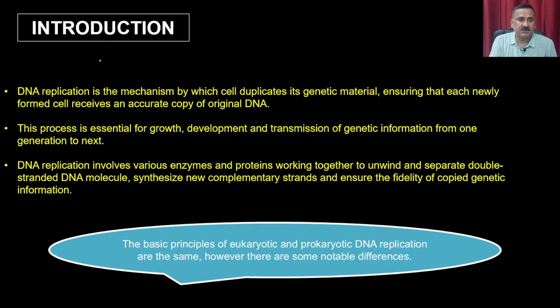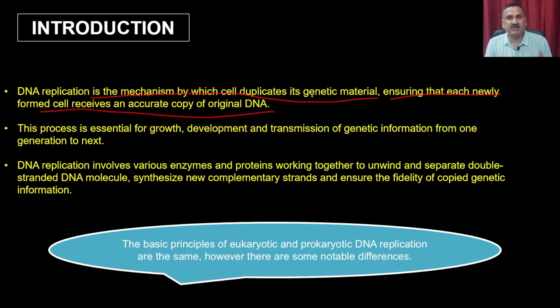In today's lecture, we are going to discuss eukaryotic replication, because eukaryotic replication is different from prokaryotic replication in terms of the components and enzymes required, and the properties of these enzymes are very different. DNA replication is the mechanism by which the cell duplicates its genetic material, ensuring that each newly formed cell receives an accurate copy of the original DNA. This objective is also met in eukaryotic DNA replication.